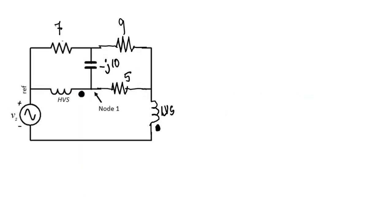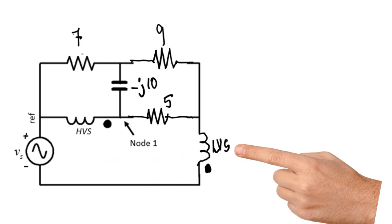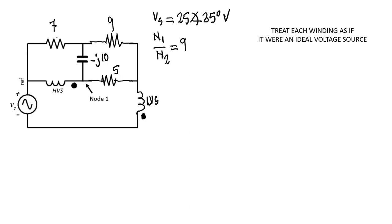Let's have a look at a numerical exercise. In this circuit there is an ideal transformer with a primary labeled HVS — the high voltage side — and LVS — the secondary, the low voltage side. The voltage source is given by an RMS phasor: 25 volts RMS at 35 degrees, and the ratio of the transformer N1 over N2 is 9. I suggest treating each winding of an ideal transformer as if it were an ideal voltage source, which simplifies how you write equations.